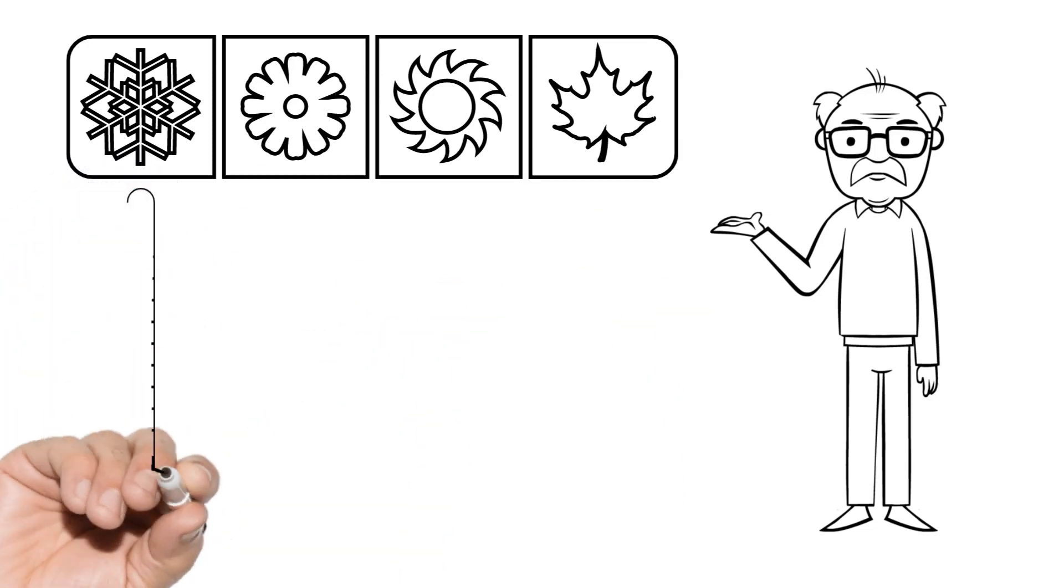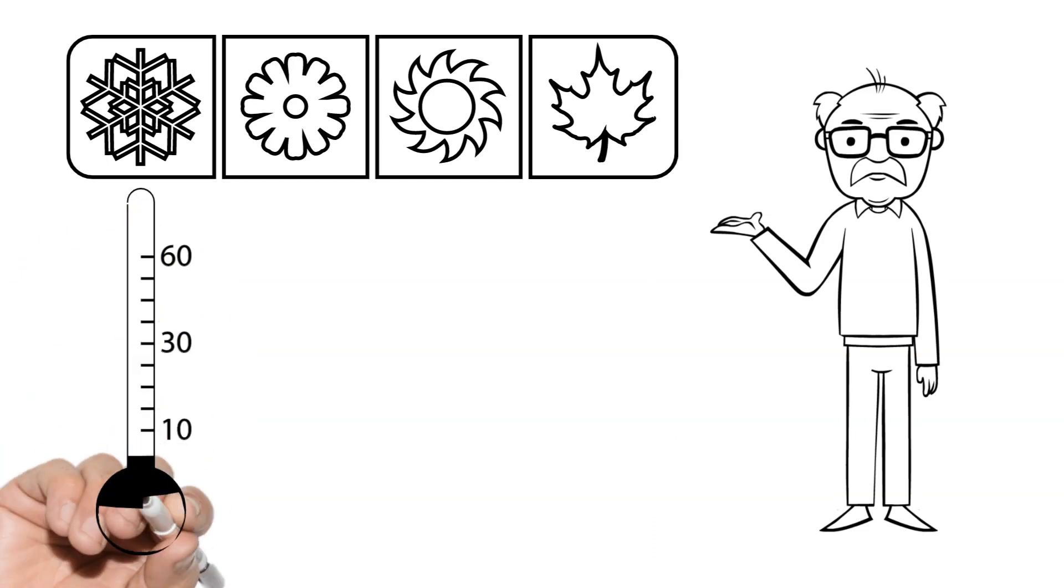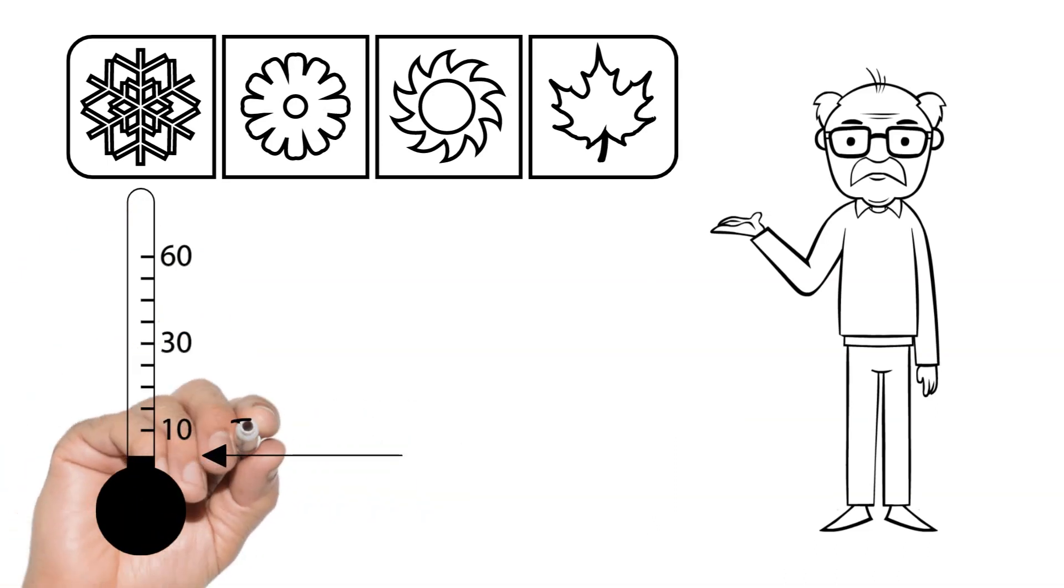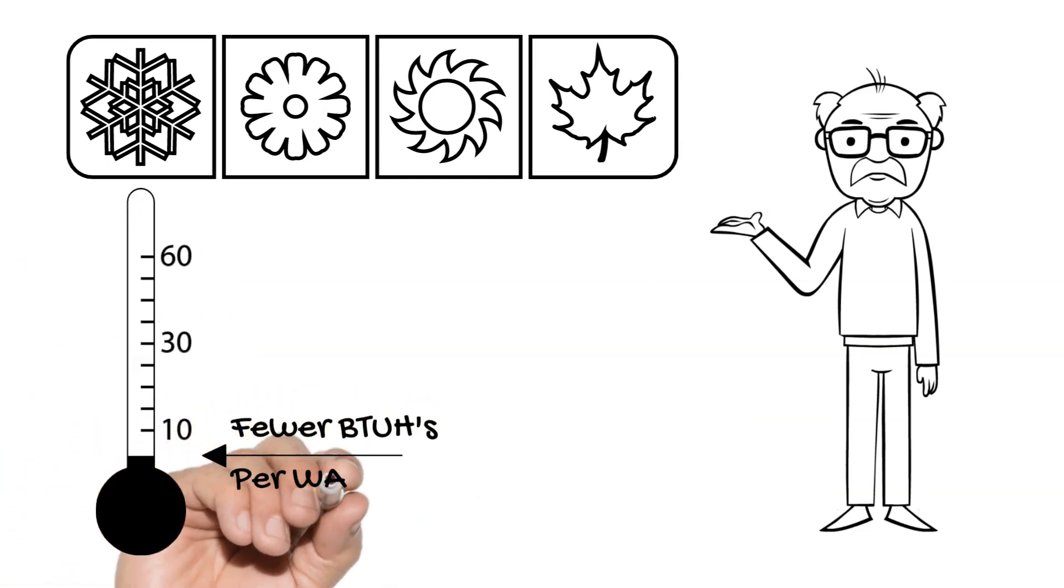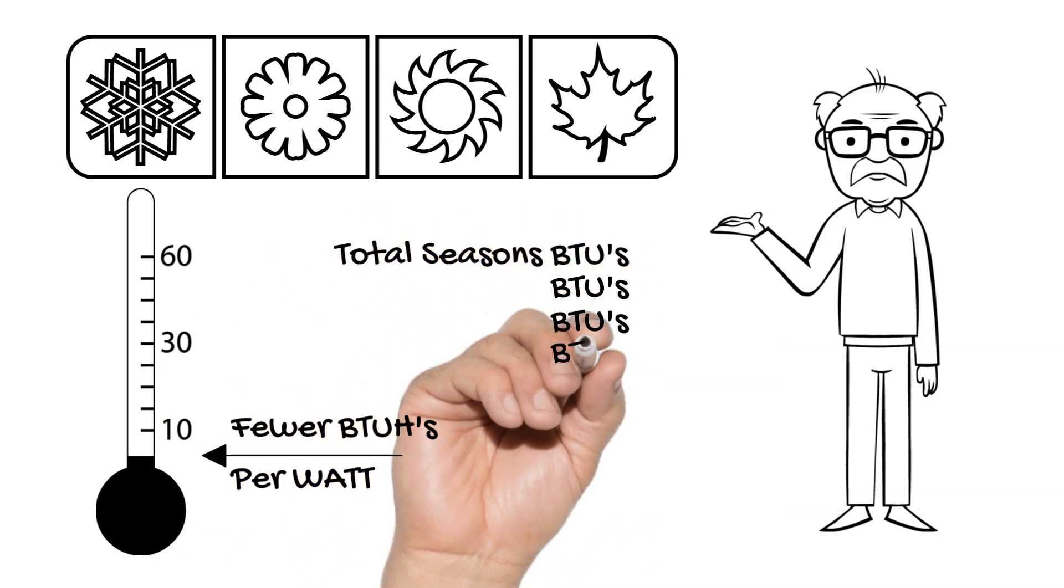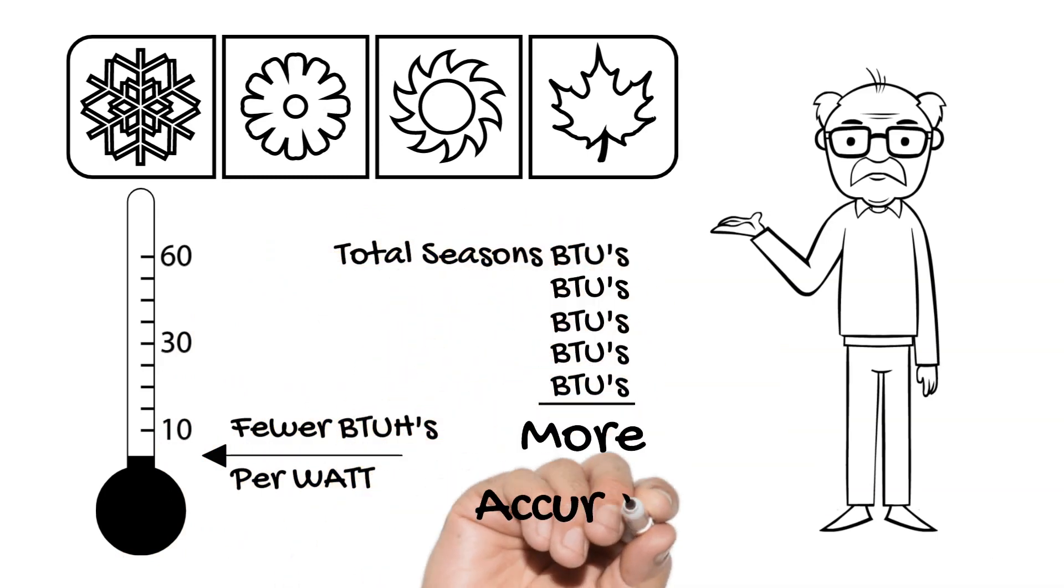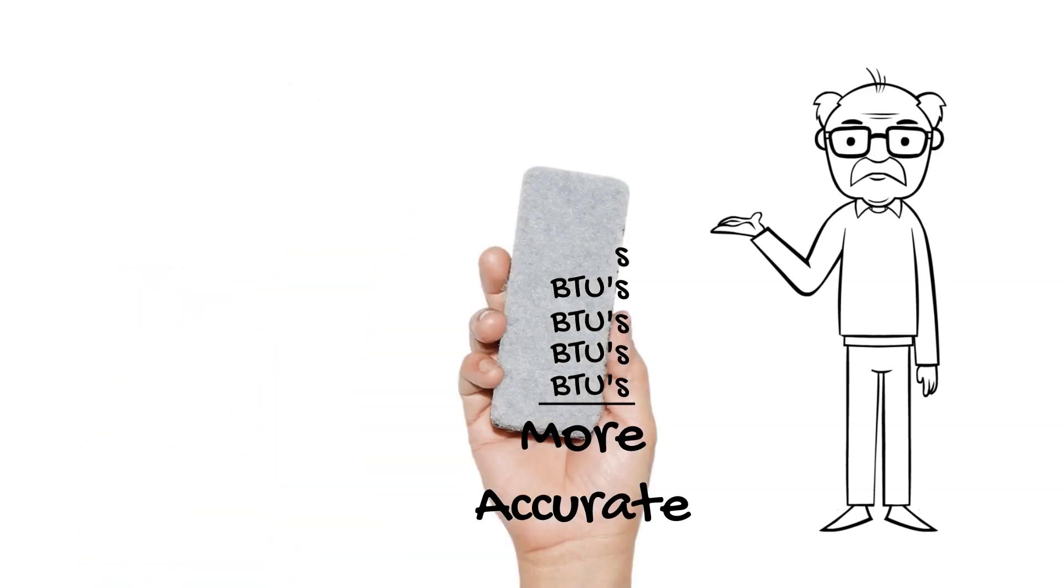Our seasons vary in temperature for heating dramatically. At lower temperatures, heat pumps move less heat per watt. So, taking the total season's BTUs accounts for a more realistic comparison and evaluation.